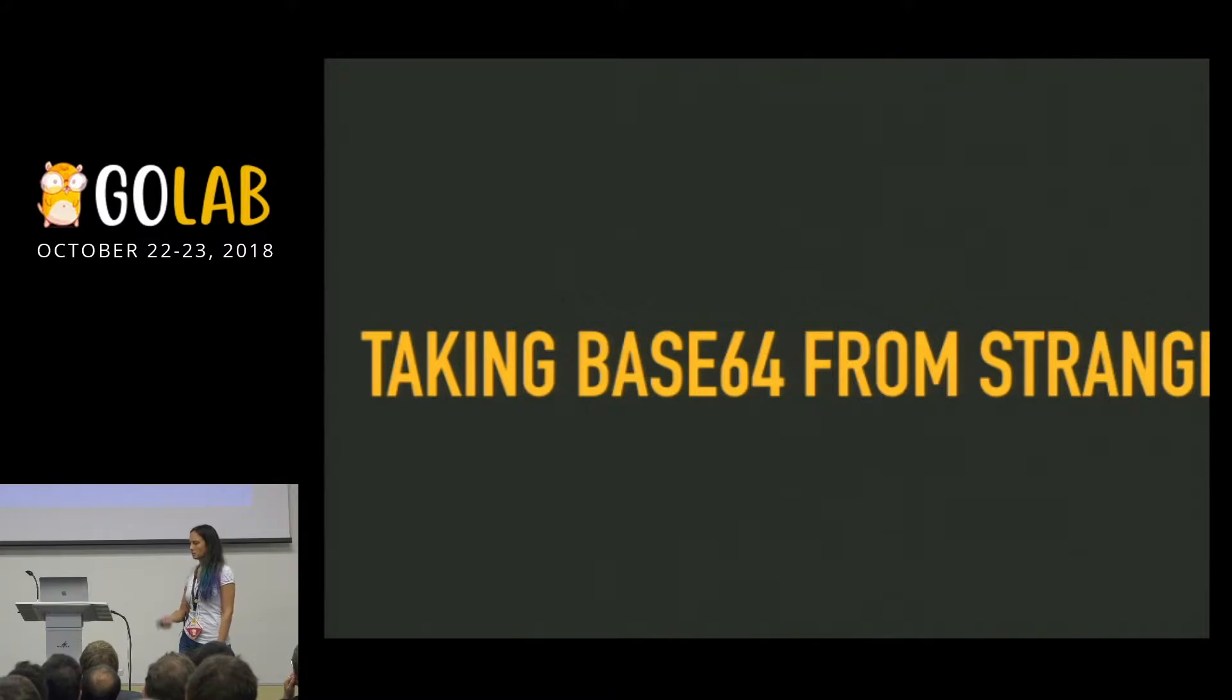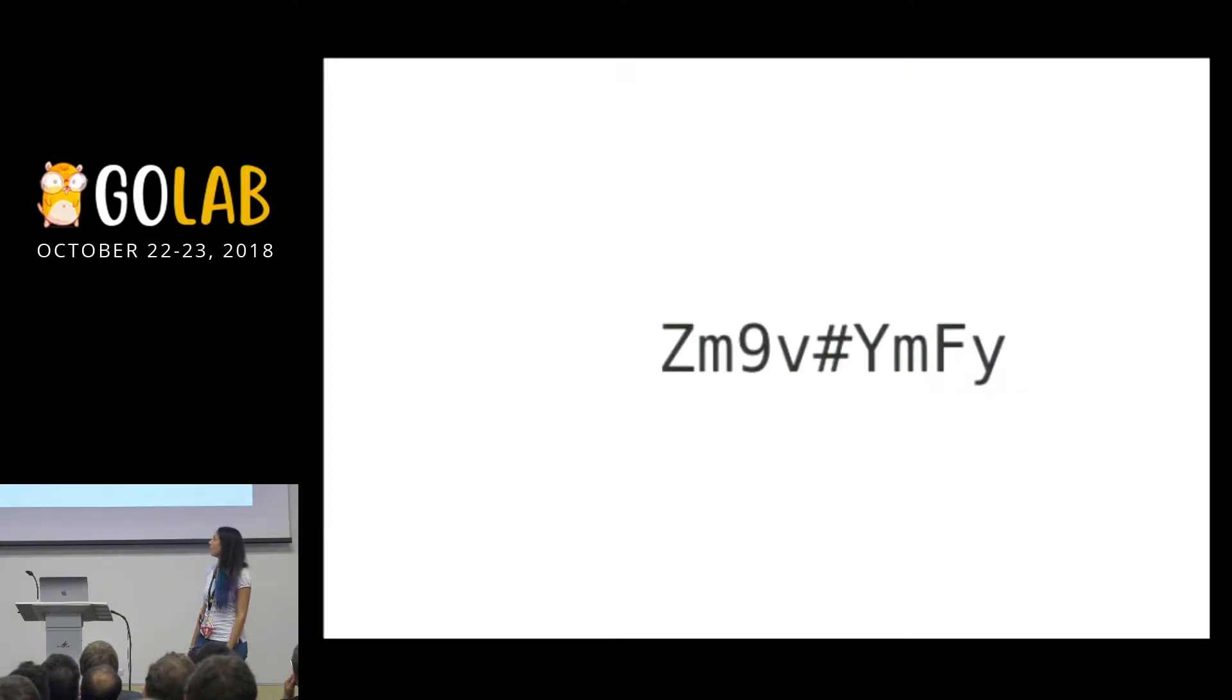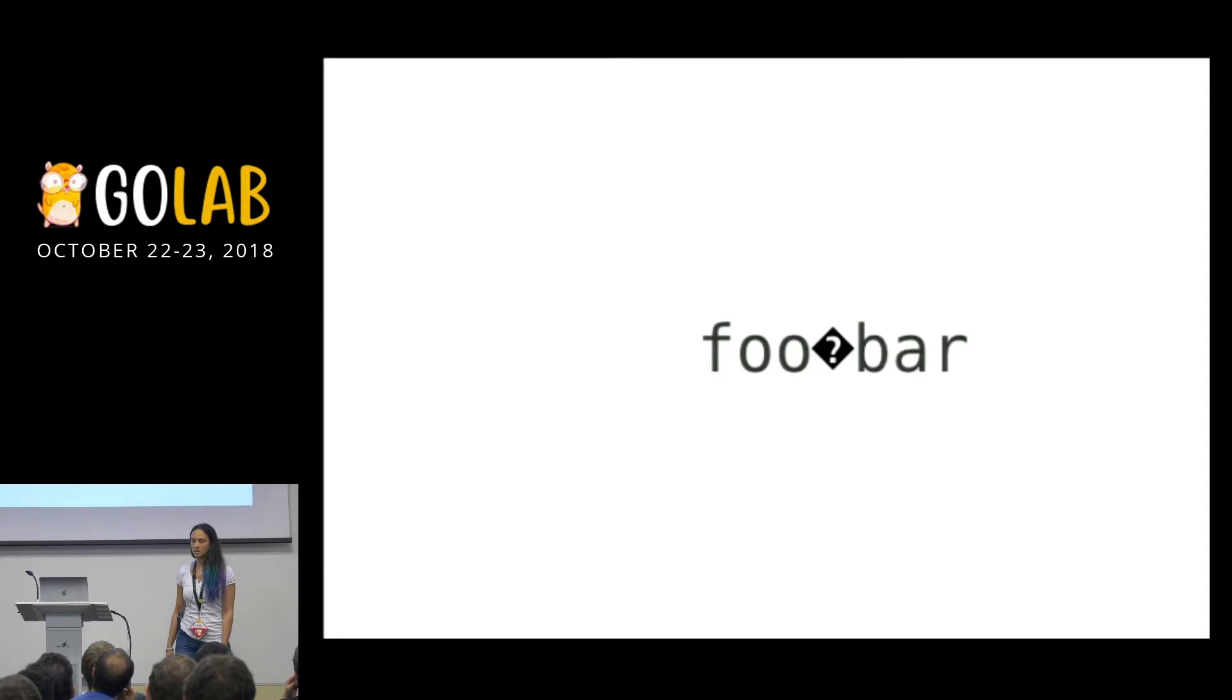For example, how would you decode something like this with a special embedded character in between? My first approach was to go through the string with two indexes, analyze the first character, second one, third one, fourth one, and so on and so forth, until we reach the invalid character, accept the first part of the string, try to decode that, and then keep going until the end of the string, the second half, and then merge the result.